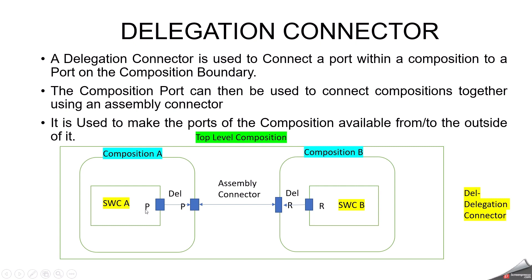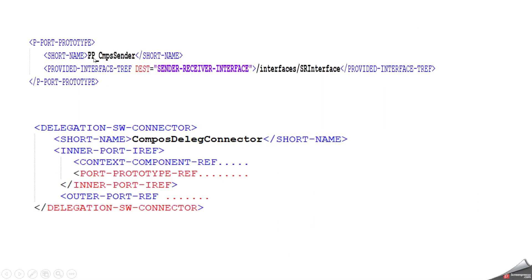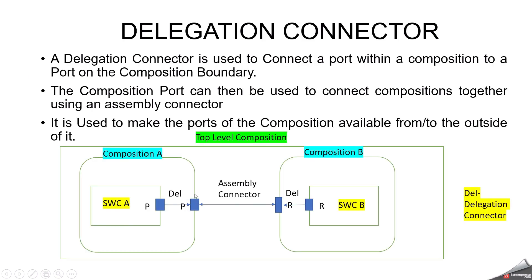For example, software component A has a P-port — here you can see I have selected the P-port called PP_composition_sender. For this P-port, with the use of a delegation connector, we have created an outer port reference. With the outer port, we have to create an outer port for composition A, meaning inside software component A. The same thing we have to do for the other composition and software component, and these two will be connected via an assembly connector. But if you want to directly make a communication between software component A and software component B inside the composition, this is not possible — it violates the AUTOSAR rule as well. So you have to create the outer port by using a delegation connector.